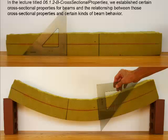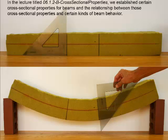In the lecture titled cross-sectional properties of beams, we established certain cross-sectional properties and the relationship between those cross-sectional properties and certain kinds of beam behavior. We're going to review some of that information and extend it to establish equations that will allow us to size sawn lumber beams. You'll recall that we had a piece of foam rubber which we marked with two vertical lines. Those lines were parallel to each other when the beam was in its relaxed state sitting on the table.